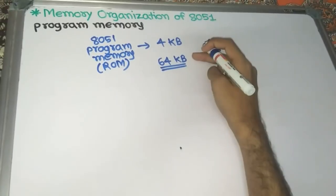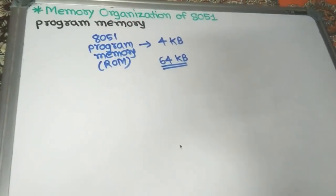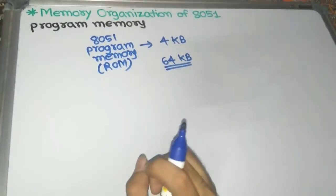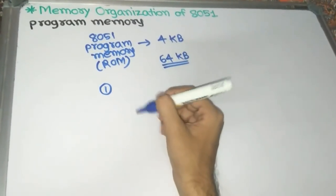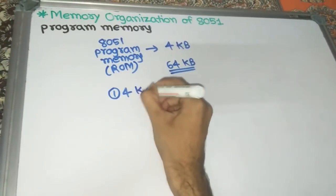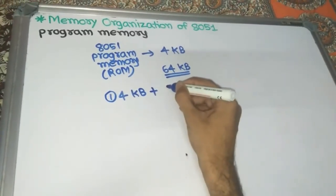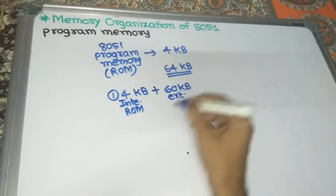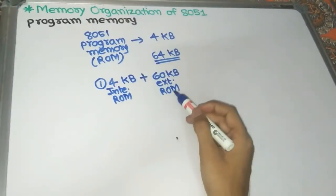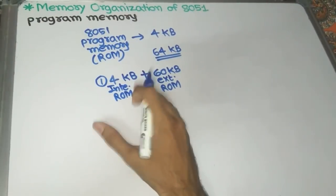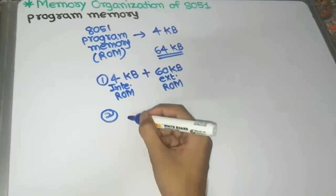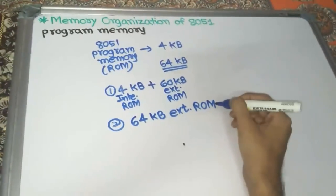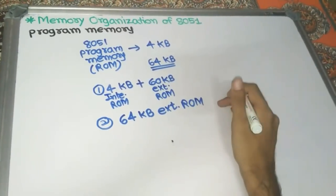External memory can be expanded to 64KB. The internal program memory (ROM) is 4KB. In the 8051 microcontroller, at a time we can use up to 64KB of ROM memory. For this, there are two options: the first is to use the 4KB internal ROM along with 60KB of external ROM in combination.